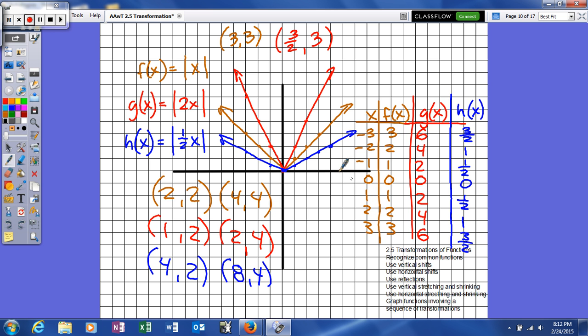When I plug in 1, I actually get 2 times 1 is 2, and therefore, the absolute value of 2 is 2. So, you can see we get some different values. But what we're actually going to do is we're going to look and see what matches up. So, if you have some ordered pairs, say our original ordered pair was this, for our brown function 2, 2, and 4, 2.